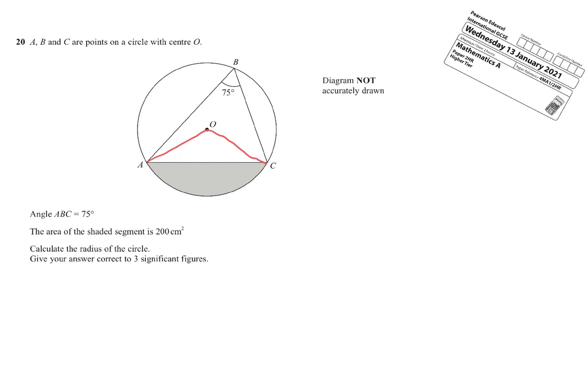Now, just by drawing that on, I can now see I have a circle theorem going on here because I have, going up from points A and C, I have 75 degrees on the circumference, so the angle at the center here must be double that. So that's 150 degrees, so I'm going to write that on. The reasoning would be angle at the center is twice the angle at the circumference.